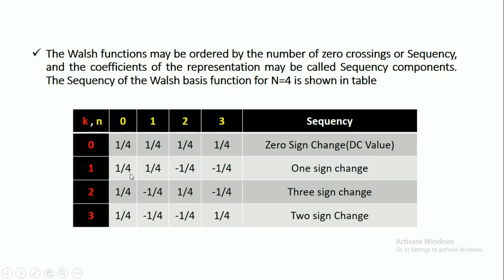For k=0, there is no sign change, so it can be called a DC value. For k=1 and n=2, there is a change from 1/4 to -1/4, so only one sign change. For k=2 and n=1, there is a sign change and another sign change, giving 2 sign changes. For k=3, there are 3 sign changes across the values.